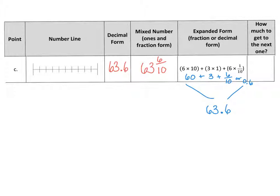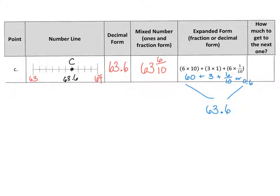Now it's asking us to place it on the number line. What two wholes is it between? We know we're starting with 63, and the next whole after 63 is 64. So 63 and six-tenths has to be placed between those two wholes. We count one through ten — this is broken up into tenths. Let's find our six: one, two, three, four, five — here's our halfway — and six is this one right here. There is our point C, which is 63 and six-tenths. How much more do I need to add to that six-tenths to get to the next whole? It would be four-tenths, or 0.4 — either one is acceptable, but try to get into the habit of using decimals.